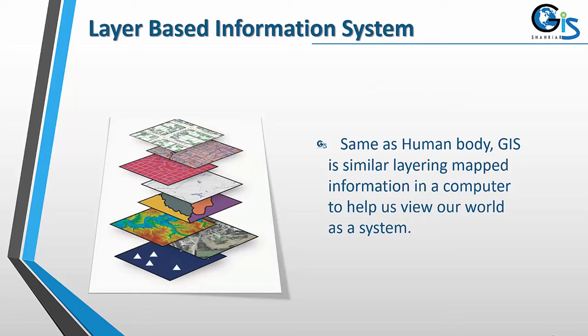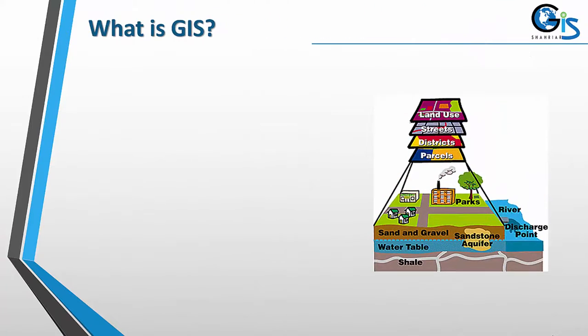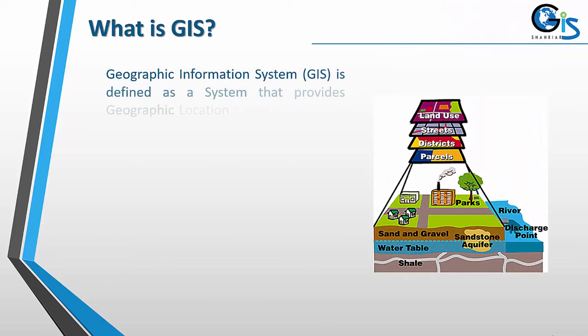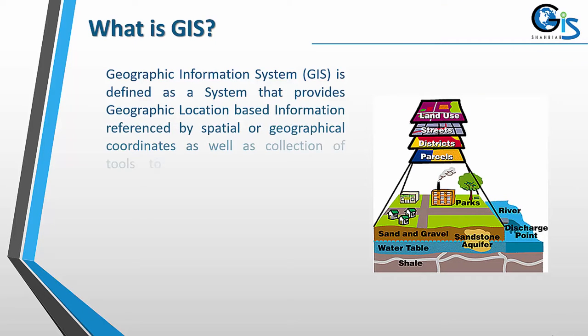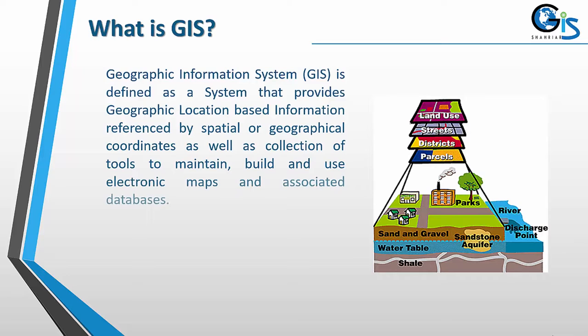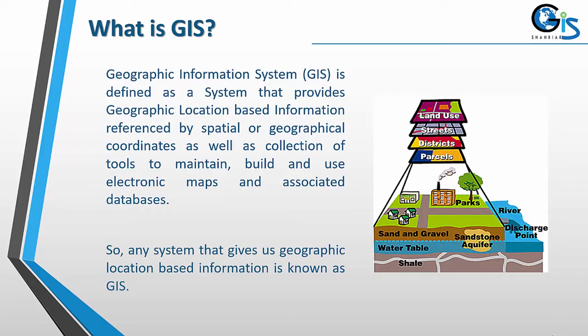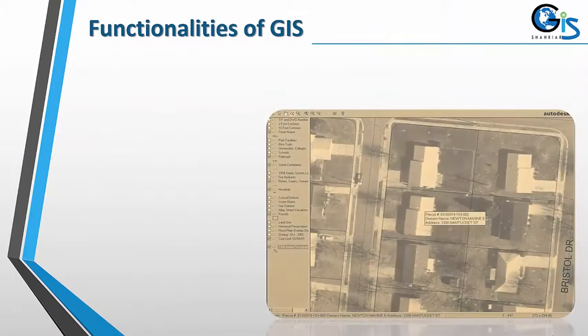What is GIS? Geographic Information System is defined as a system that provides geographic location-based information referenced by spatial or geographic coordinates, as well as a collection of tools to maintain, build, and use electronic maps and associated databases. So any system that gives us geographic location-based information is known as GIS. Now let's see the functionalities of GIS.